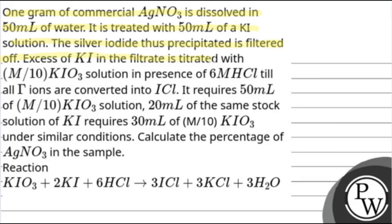Excess of KI in the filtrate is titrated with M/10 KIO3 solution in presence of 6 molar HCl till all iodide are converted into ICl. It requires 50 ml of M/10 KIO3 solution.